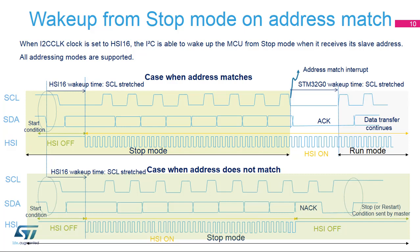After an address is received in stop mode, a wake-up interrupt is generated if the address matches the programmed slave address. If the address does not match, the high-speed internal oscillator is switched off, no interrupt is generated, and the device remains in stop mode. Clock stretching must be enabled because the I2C peripheral stretches the clock line low after the start condition until the high-speed internal oscillator is started. After receiving an address that matches the programmed slave address, the I2C peripheral also stretches the clock line low until the STM32G0 device is awakened.